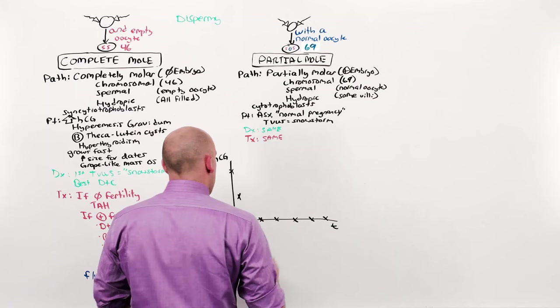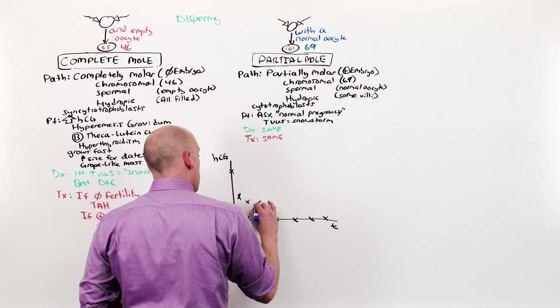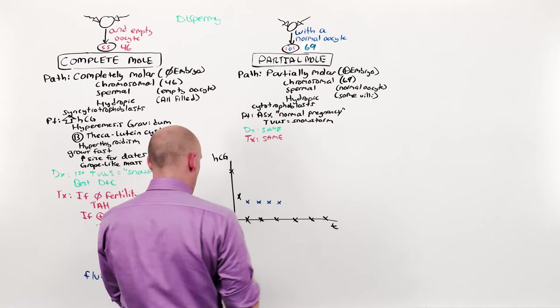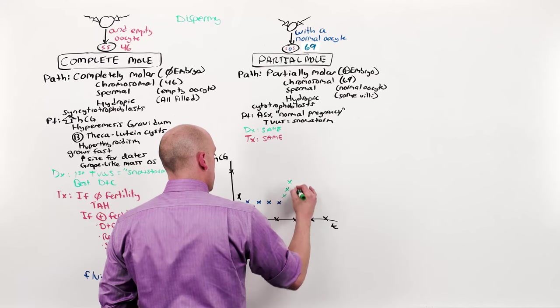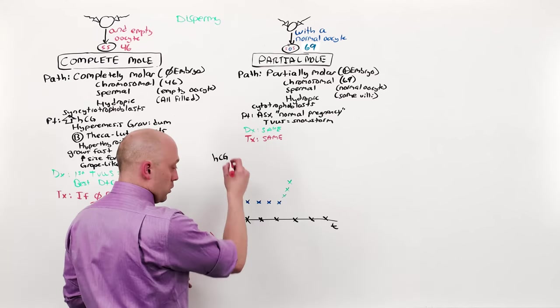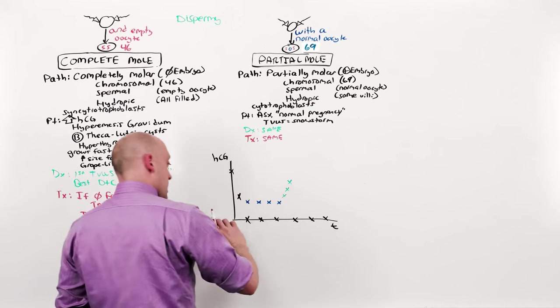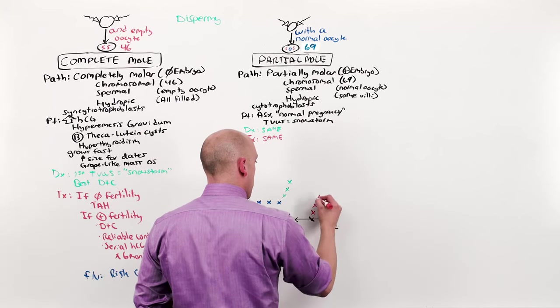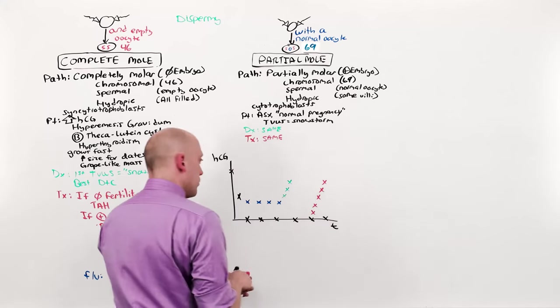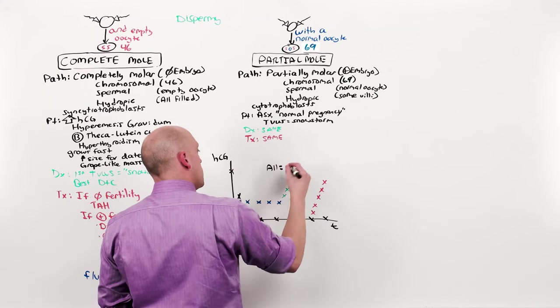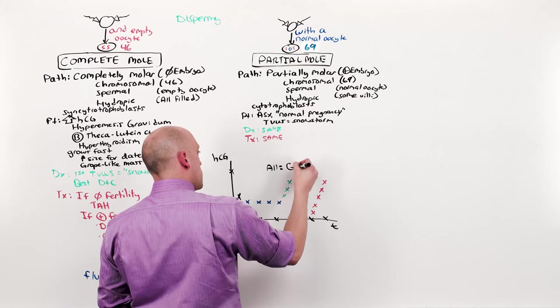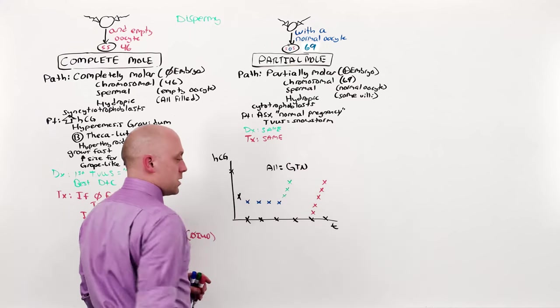But instead, if there's a plateau or a rise in the HCG or worse, it goes to zero and then much later begins to rise. All of these tell you that she's got gestational trophoblastic neoplasm and she needs to be treated.